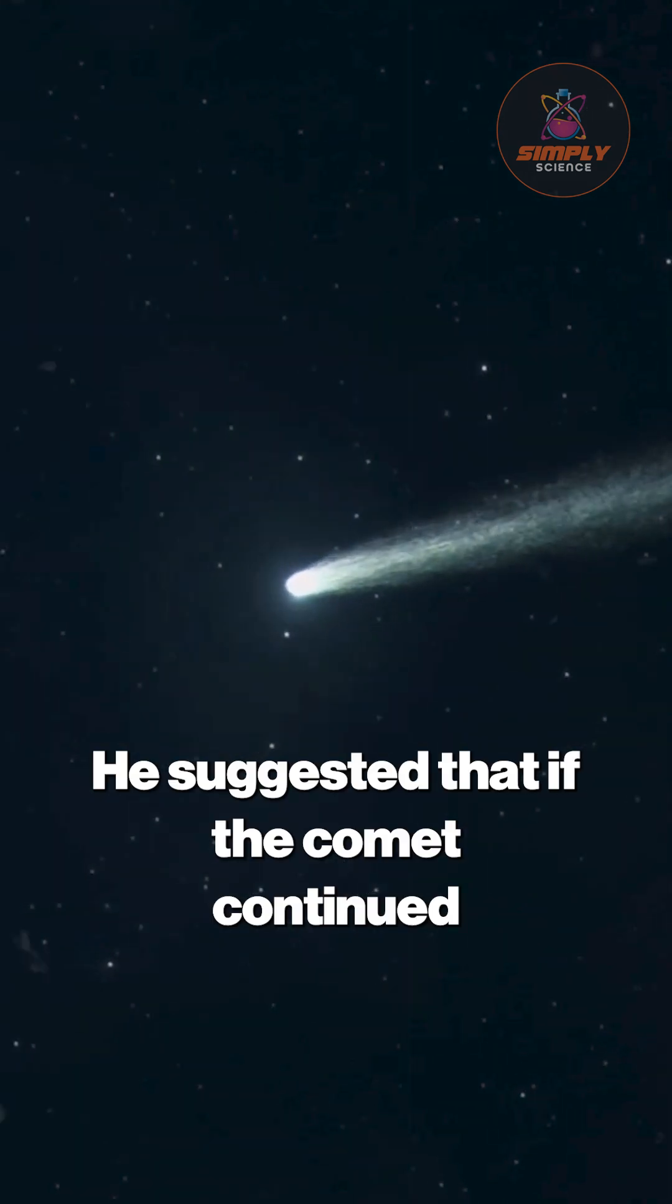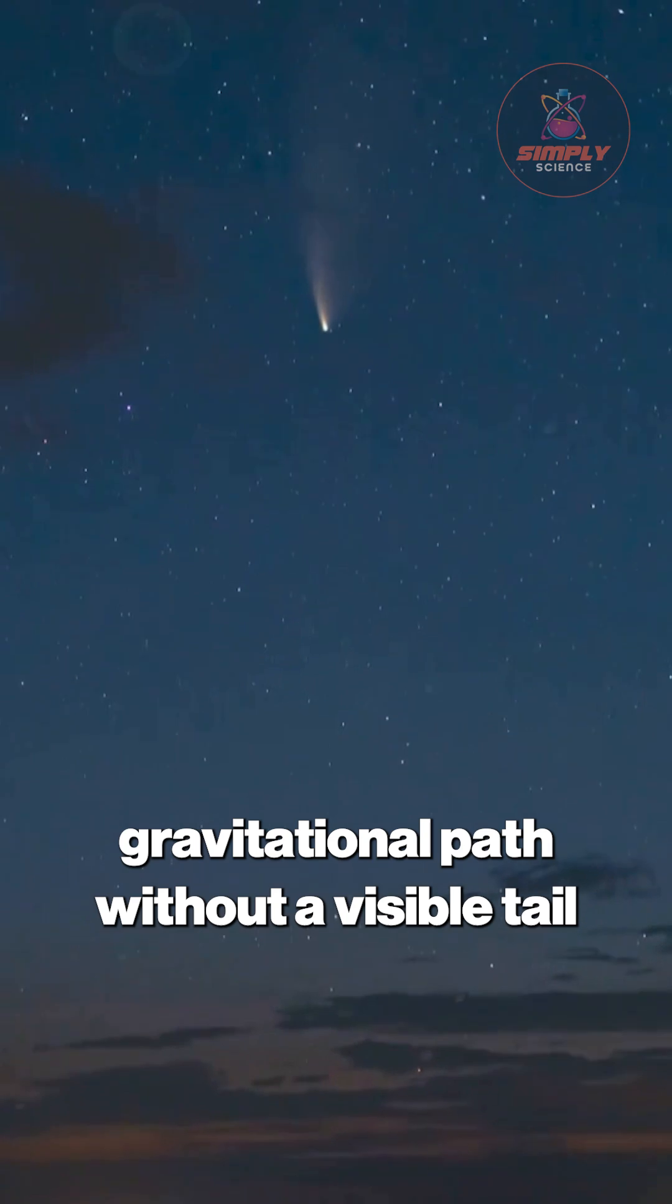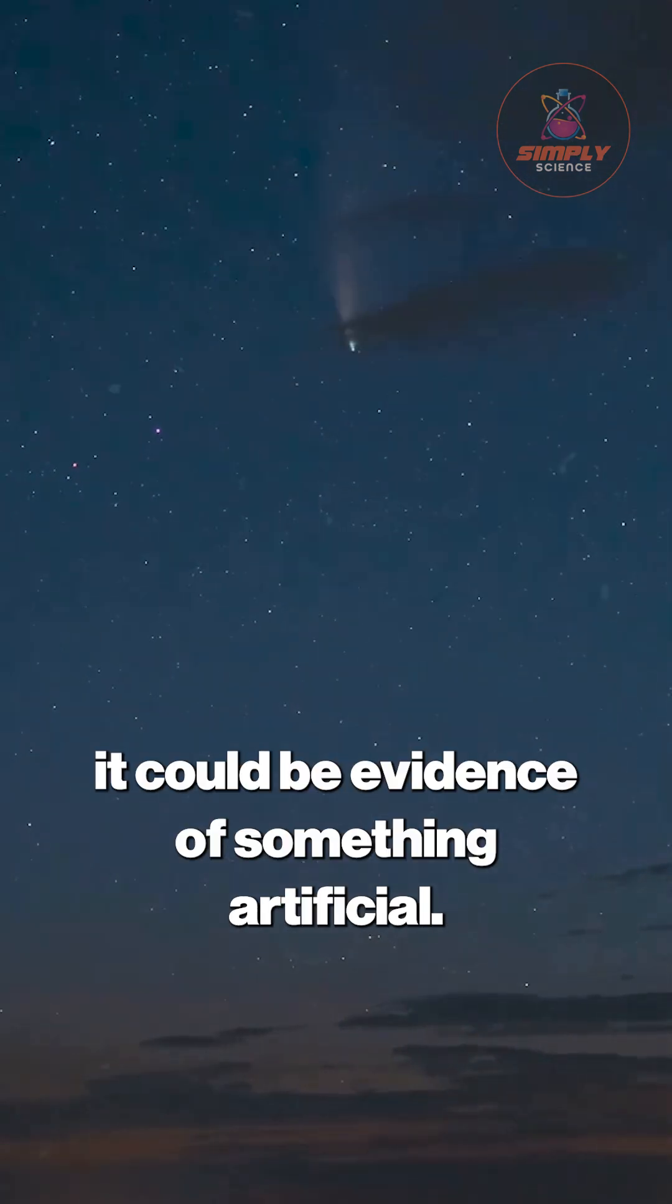He suggested that if the comet continued to show no outgassing, or if its path deviated from a purely gravitational path without a visible tail to explain the push, it could be evidence of something artificial.